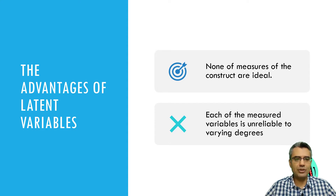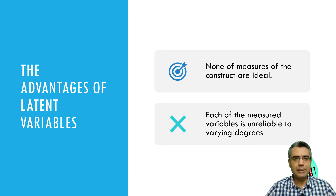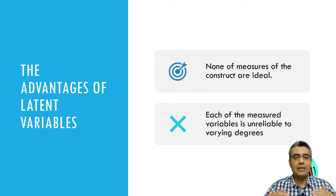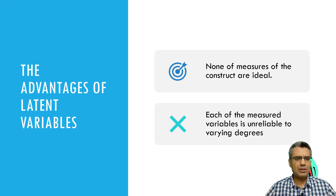But why do we need several items? Why not use only one question to measure a latent variable? The reason is that none of these items are perfect — each has some measurement error. People may have different interpretations and may understand questions differently from others. So we use several items to reduce the measurement error.